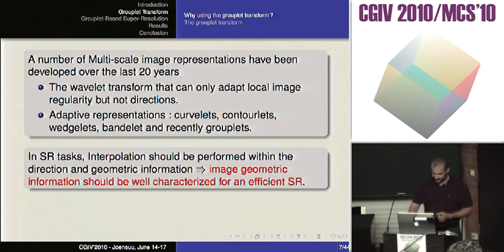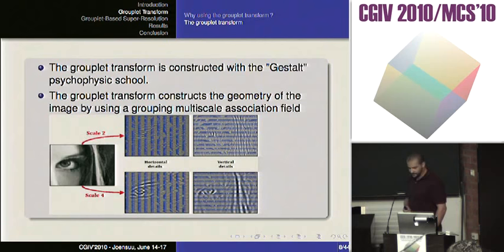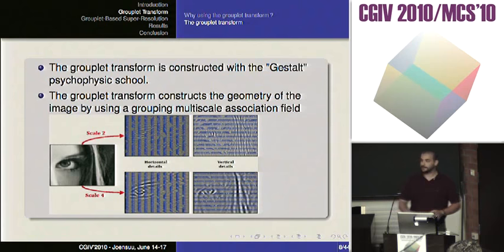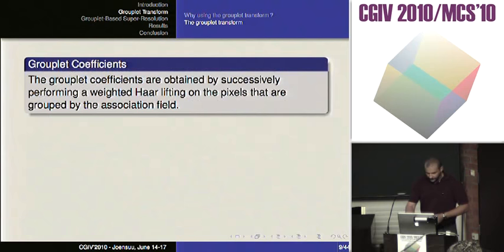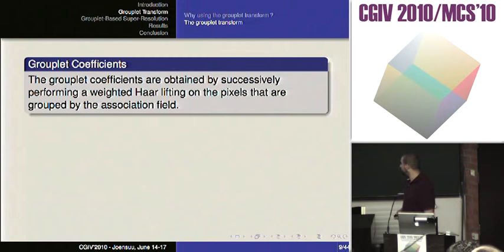The grouplet transform is a transform constructed thanks to the Gestalt Psychophysical School — it was based on the results of that school. The main idea is that the grouplet transform constructs geometry by using a grouping multi-scale association field, as you can see here on this part of Lena. I will be fast on the details; you can refer to the paper or the patent describing this transform.